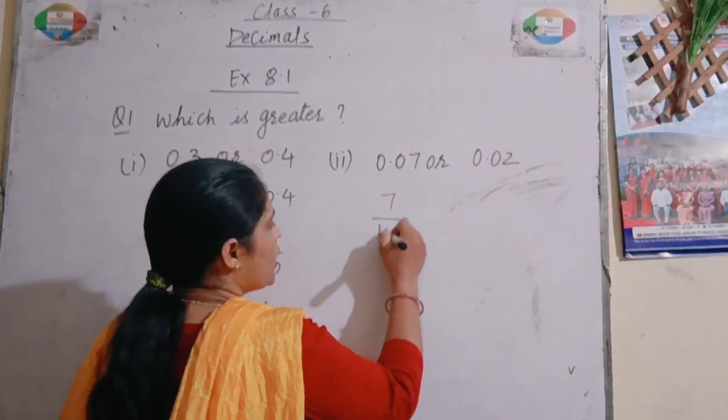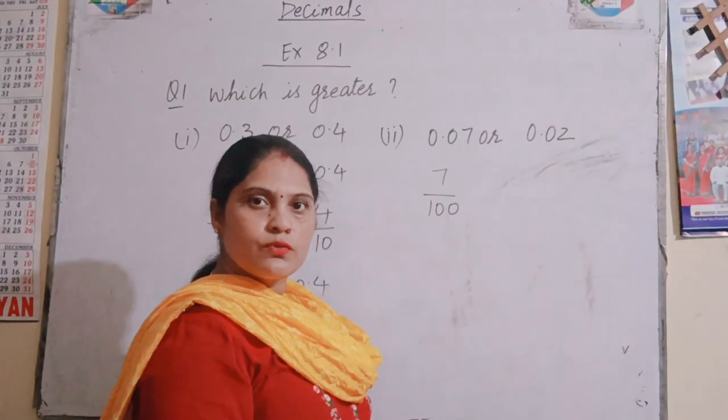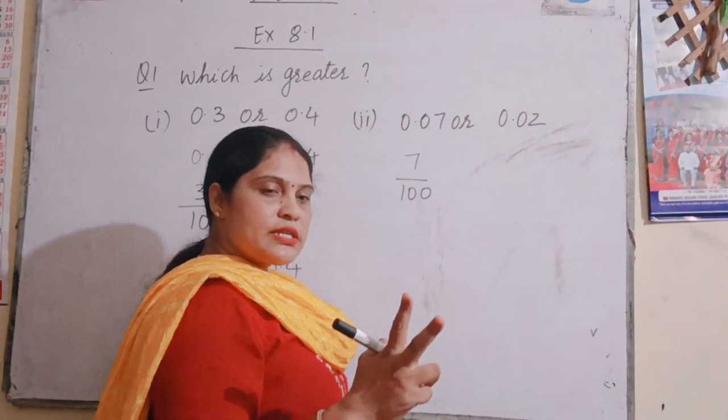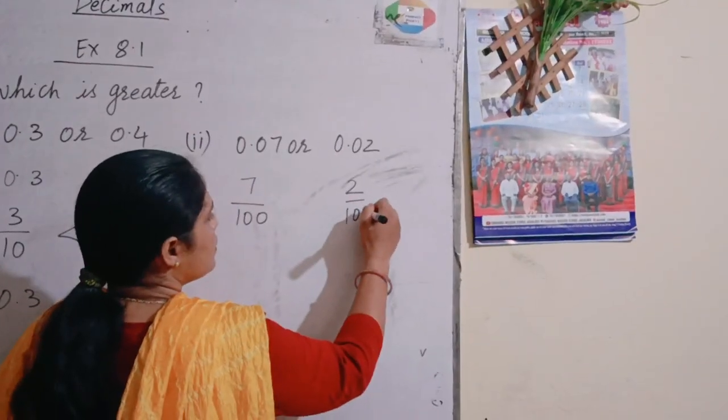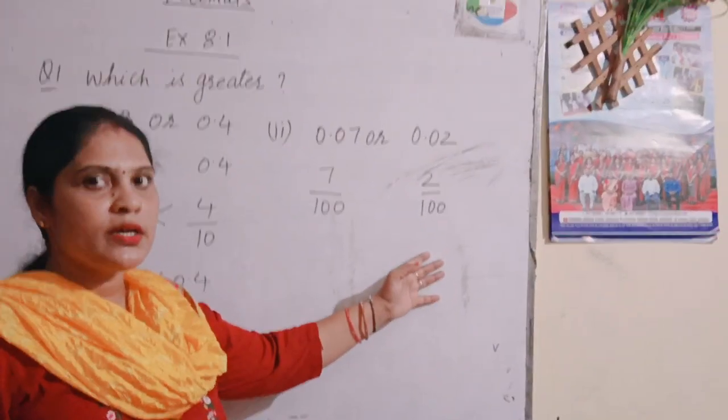So 1, 2. 2, 0 we will put. Again, 2 numbers are there after the decimal. So 2 upon 100. So the denominator is same.